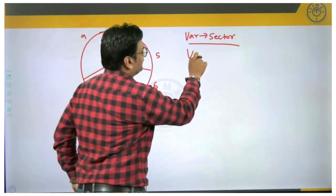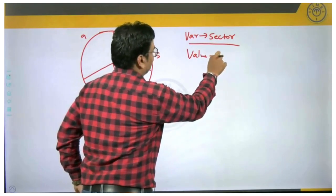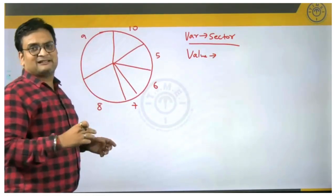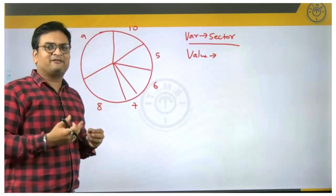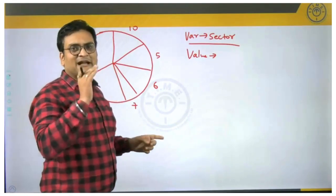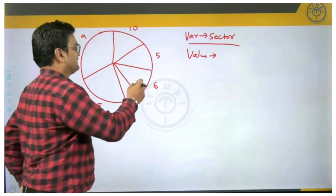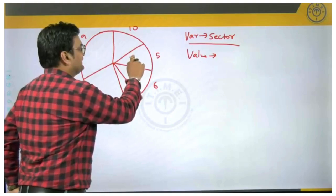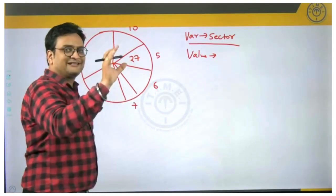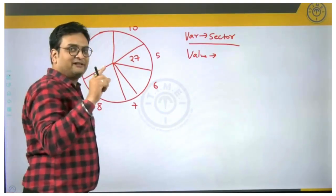The value of the variable — these sectors — can be given in 3 different ways. One of the ways is absolute value. For example, I can directly say that in class 5 there are 27 students, class 6 there are 33 students, and so on. That is one way.